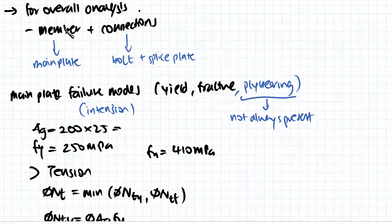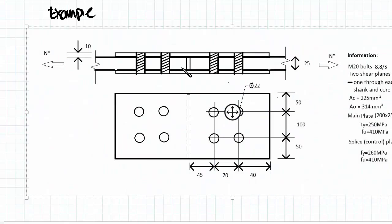So the main one is the member. If we look back at the example, we have a member here. This member could be an I-beam, could be another section, but in our case it's an actual plate of 200 by 25.